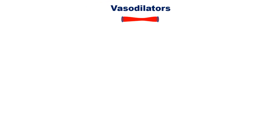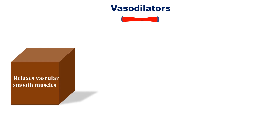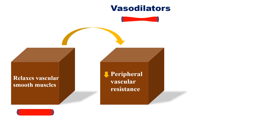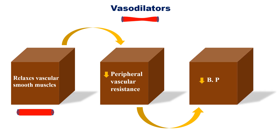Another category of anti-hypertensive drugs is vasodilators. As the name indicates, these are agents which dilate blood vessels. One of the causes of hypertension is vasoconstriction, where blood vessels are constricted, resisting blood flow and increasing blood pressure. These vasodilators relax vascular smooth muscle and decrease peripheral vascular resistance. When blood vessels are relaxed, peripheral vascular resistance is less, which finally leads to decreased blood pressure.